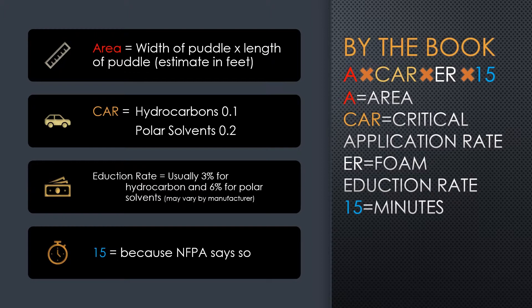Your critical application rate is set at 0.1 and 0.2 — so 0.1 for hydrocarbons and 0.2 for polar solvents. We're going to have a higher rate for polar solvents. Your reduction rate is 3% and 6%: it's 3% for regular hydrocarbons, 6% for polar solvents, so that's 0.03 and 0.06. And then 15 minutes is how long you're going to have to do all this — you need to apply your foam at the critical application rate and your reduction rate for 15 minutes.